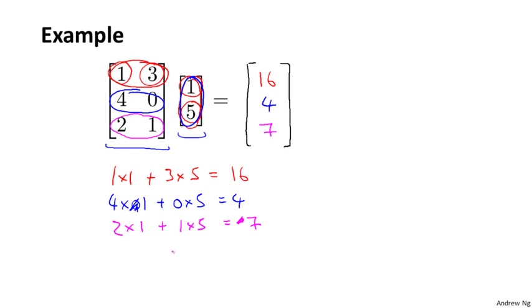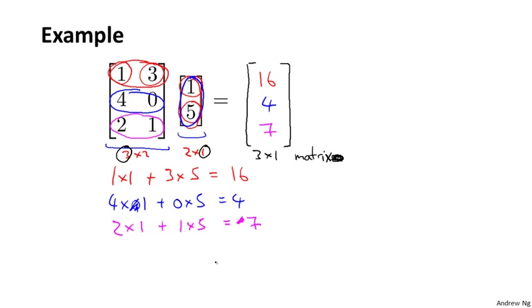It turns out that the result of multiplying a 3 by 2 matrix by a 2 by 1 matrix is going to be a 3 by 1 matrix. A 3 by 1 matrix is just a 3 dimensional vector. I realized that I did that pretty quickly and you're probably not sure if you can repeat this process yourself, but let's look in more detail at what just happened and what this process of multiplying a matrix by a vector looks like.